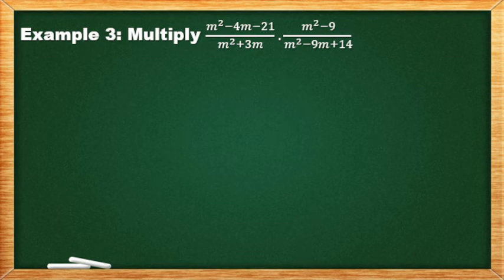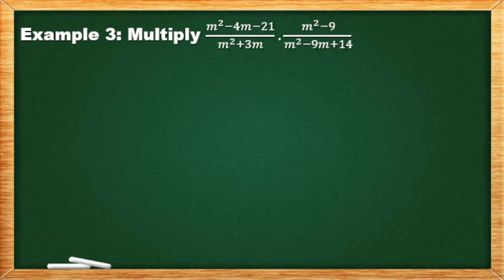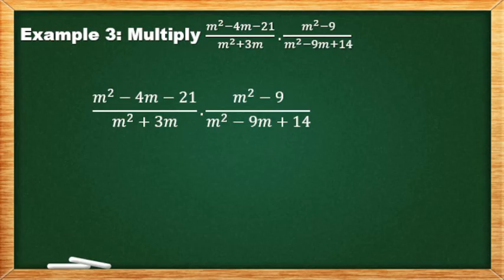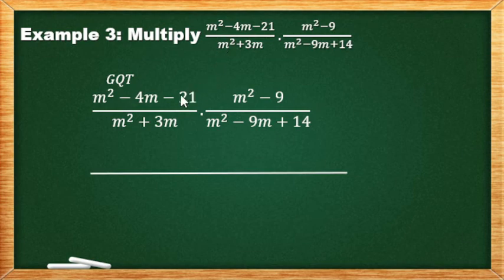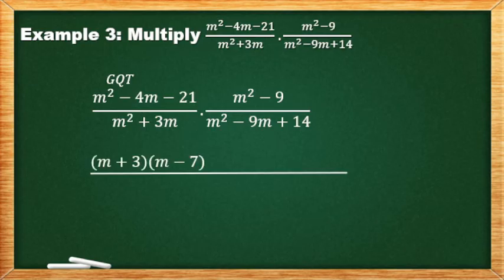Example number 3: Multiply (m²−4m−21)/(m²+3m) times (m²−9)/(m²−9m+14). Copy the given. Apply natin yung mga method. The first one, GQT — what are the two numbers if you multiply to get −21, but when you add them you get −4? Negative 4 by negative 21 means the two numbers have magkaibang sign. Pero kapag in-add natin naging negative 4, so the bigger number should be negative. So, the two numbers are −7 and +3, because (+3)(−7) = −21 and −7+3 = −4.